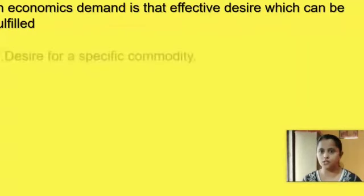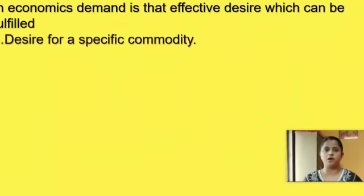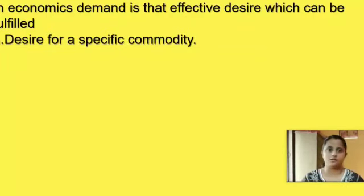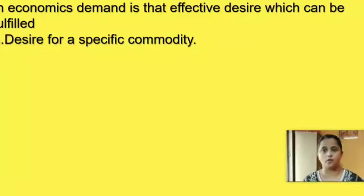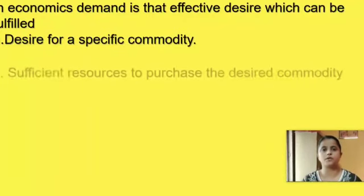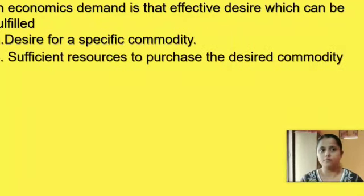To sum up, demand has four prerequisites. The first is a desire for a specific commodity — one must have a craving for a particular commodity. For example, my cameraman has a desire to own a high-resolution DSLR camera, and I have a desire to own a BMW car.